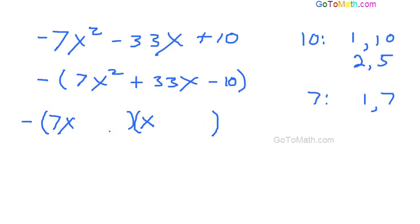But the good news is, we don't have too many others to test. If I had put the 10 here, that would be 70. And then the 1 here, that's definitely not going to work. So it's got to be the 2 and the 5. So let's just throw this in. 2 here, 5 here. 7 times 5 is 35. Aha! Let's make that a plus and that a minus. So 7 times 5 is 35. Minus 2 is 33. And negative 2 times positive 5 is negative 10.